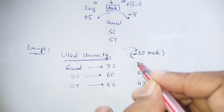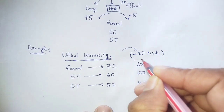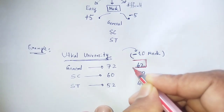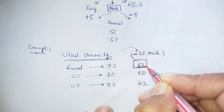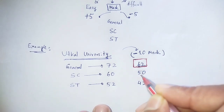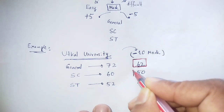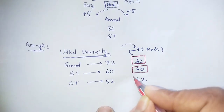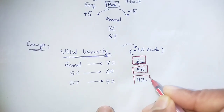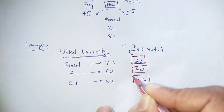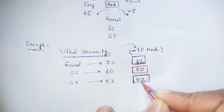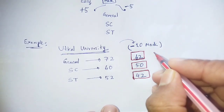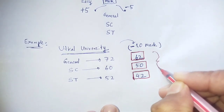Utkala University expected cutoff: General category 62, SC 50, ST category 42. This is my expected cutoff for CPT Physics 2024.